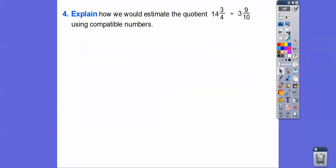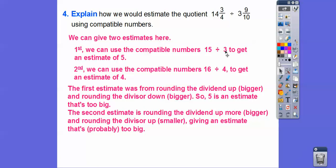So explain how we would estimate the quotient of 14 and 3/4 divided by 3 and 9/10 using compatible numbers. There are a couple of options here. First, we can round to 15 and 3 — those are nice compatible numbers — and 15 divided by 3 is 5. Or we can round to 16 and 4, and 16 divided by 4 is 4. The first estimate rounds the dividend up and the divisor down, making the quotient bigger, so 5 is probably too big. The second estimate rounds both up, and the actual answer is probably around 3.7 or 3.8 — we'll show the exact method in a later lesson.